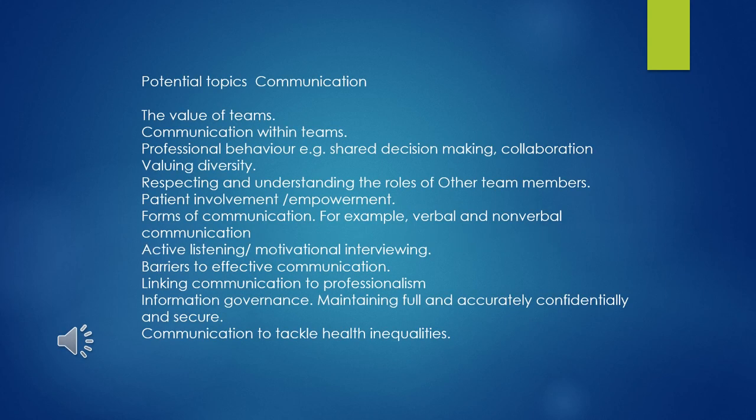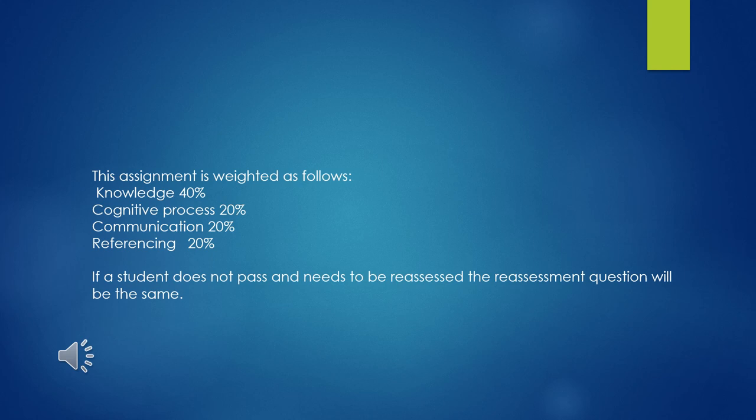Here's a list of potential topics you might want to consider for your communication section — I'll stop talking and let you read that for a few moments. You submit this electronically and receive an electronic grid or rubric back with your mark. We give 40 marks to knowledge, 20 to cognitive process, 20 for the communication of your writing, and 20 for referencing. The pass mark is 40 percent.